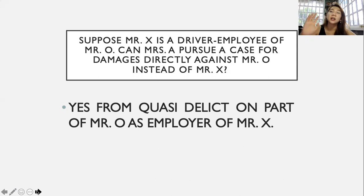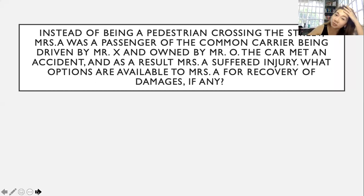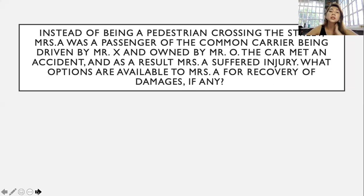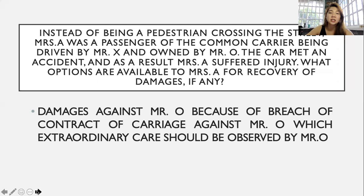Instead of being a pedestrian crossing the street, suppose Mrs. A was a passenger of the common carrier being driven by Mr. X and owned by Mr. O. The car met an accident and as a result Mrs. A suffered injury. What options are available to Mrs. A for recovery of damages? As discussed, damages can be pursued against Mr. O because of breach of contract of carriage — this is culpa contractual under quasi-delicts.